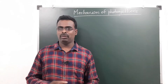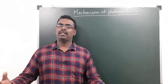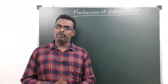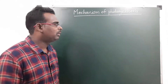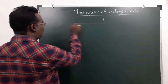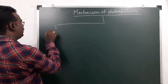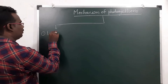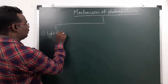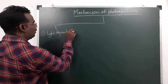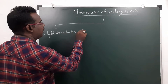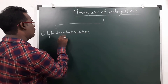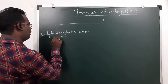Photosynthesis looks very simple but it is a very complex process. Photosynthesis will be completed in two phases. The first phase is the light dependent reaction, also called the photochemical phase.